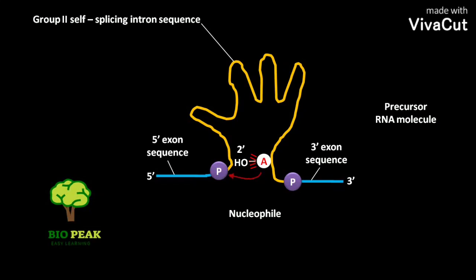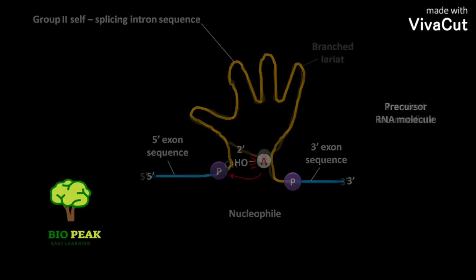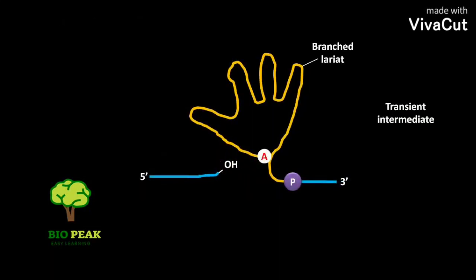Due to this attack, a transient intermediate RNA is formed with a lariat. In this transient intermediate RNA, the 3' OH of the 5' exon acts as a nucleophile and attacks the phosphate at the 3' splice site.